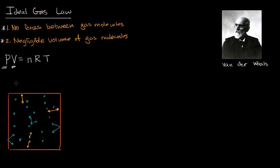So, if you hold everything else constant, it's reasonable that the real pressure will be less than the ideal pressure because of this attractive force. Van der Waals asked: can I quantify this difference? The real pressure is going to be less than the ideal pressure, so we need to find some expression that accounts for these net inward forces, especially from molecules closer to the boundaries.